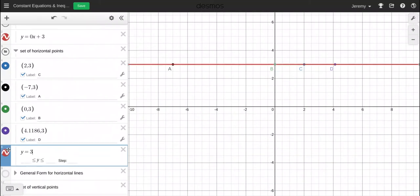And let me make this dotted and blue. And then you can see that line is y equals 3. So the line y equals 0x plus 3 is the same as the line y equals 3.